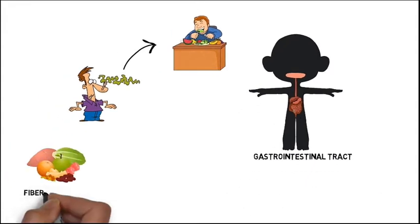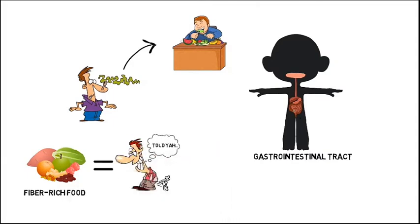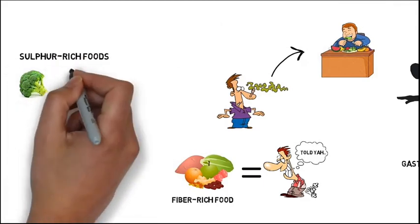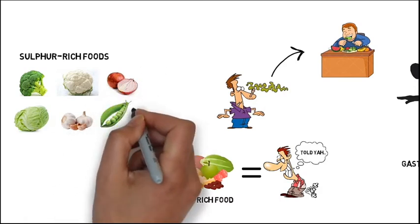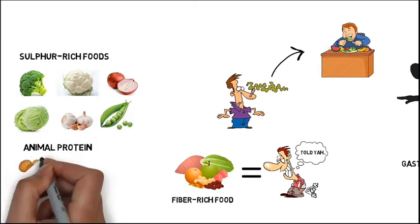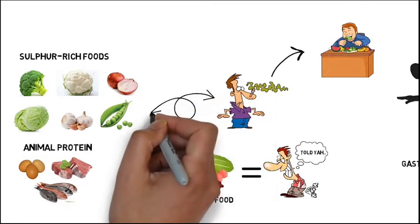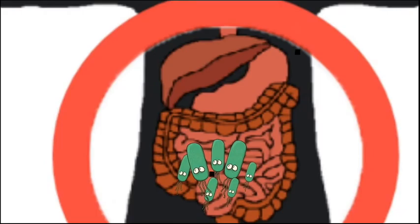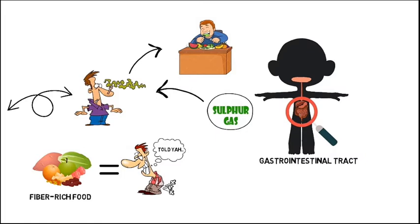While fiber-rich foods may cause you to naturally pass gas, foods that are rich in sulfur such as broccoli, cauliflower, cabbage, garlic, onions, legumes, and foods that contain a lot of animal proteins such as eggs, meat, and fish are to blame for the foul odor. When bacteria feed on these high protein foods, they produce sulfur gas which we smell as nauseating.